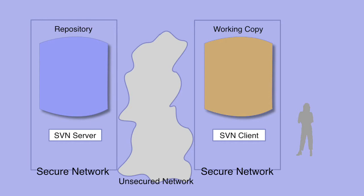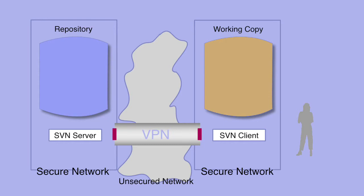One way to secure this communication is to use a virtual private network, VPN for short. A full discussion of VPNs and how to set one up is beyond this course — contact your network administrators if you want to use a VPN to secure your client-server communications. A VPN essentially extends your internal network out across an unsecured network by providing a secure, encrypted tunnel through which the client can communicate. The client sees the server as if it were on a local network, with no need for subversion to do anything to secure its communications with the server.